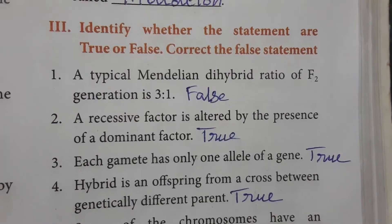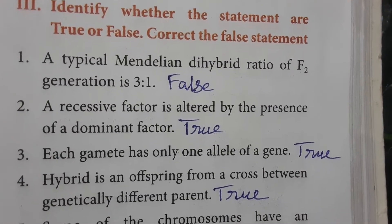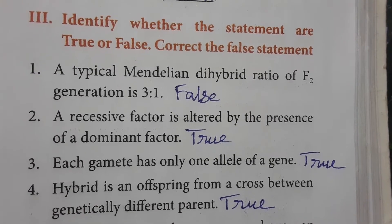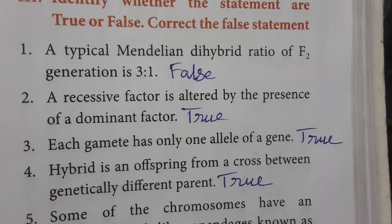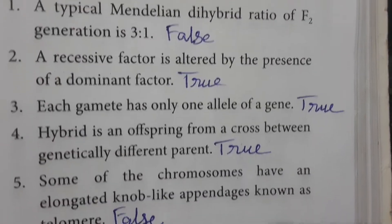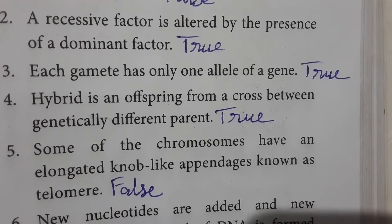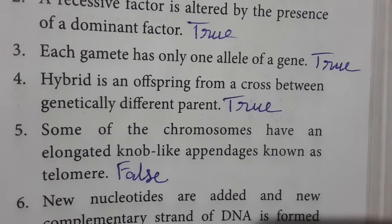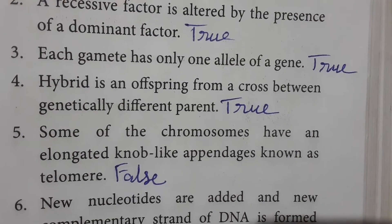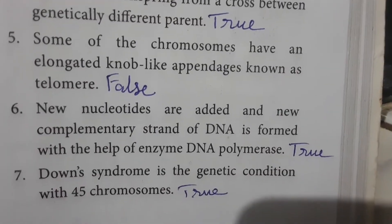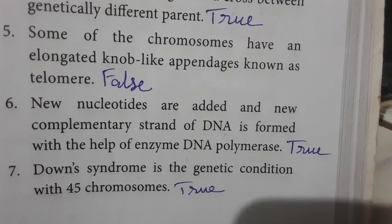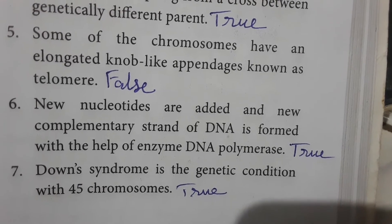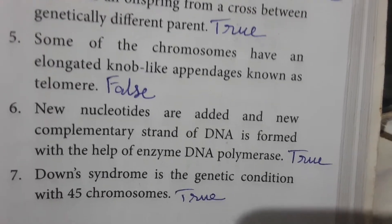True or False: A typical Mendelian dihybrid ratio of F2 generation is 3:1 — this is false; F1 gives 3:1 and F2 gives 9:3:3:1. A recessive factor is altered by the presence of a dominant factor — true. Each gamete has only one allele of a gene — true. A hybrid is the offspring from a cross between genetically different parents — true. Some chromosomes have elongated knob-like appendages known as telomere — false. New nucleotides are added and a new complementary strand of DNA is formed with the help of enzyme DNA polymerase — true. Down syndrome is the genetic condition with 45 chromosomes — true.